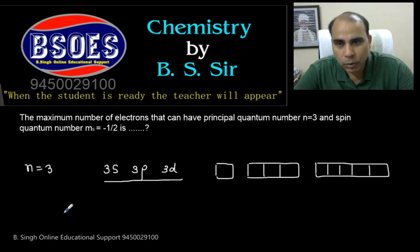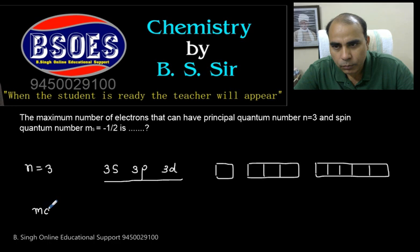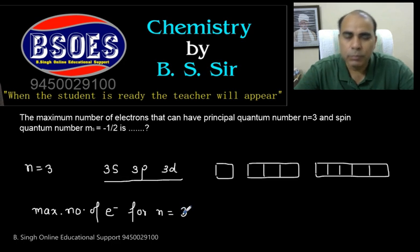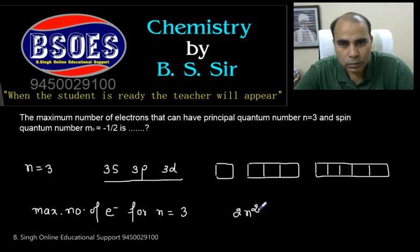If we talk about the maximum number of electrons, maximum number of electrons for n is equal to 3, this formula - maximum electron is 2n square. 2 into 3 square, what is total? 18.